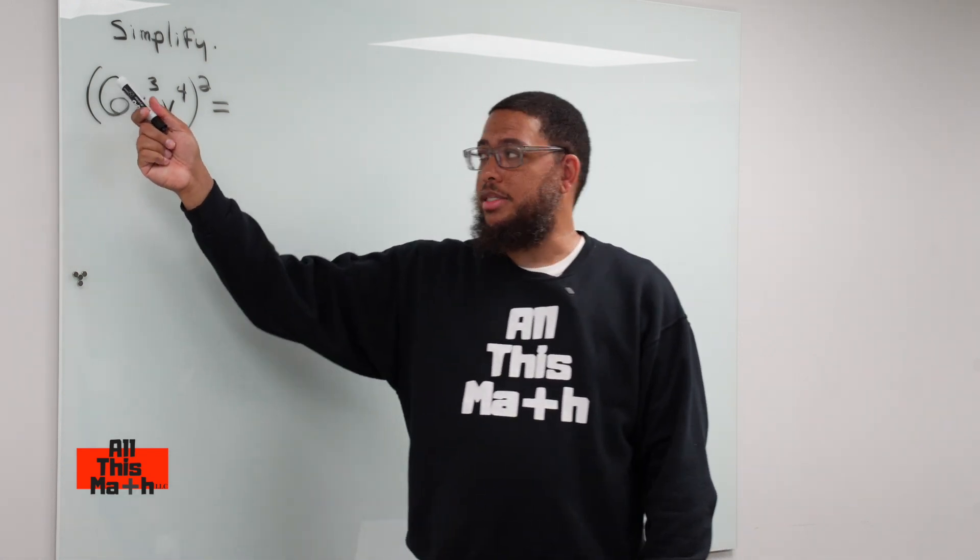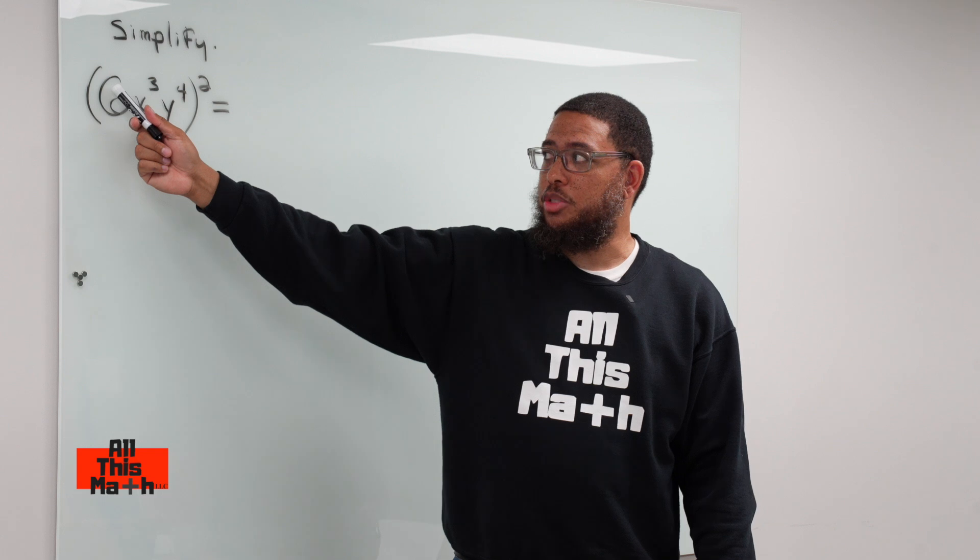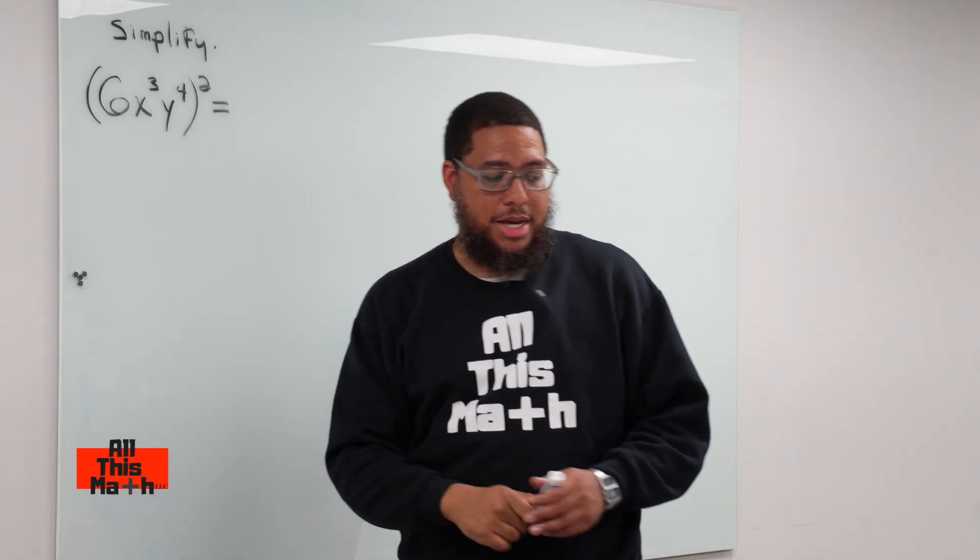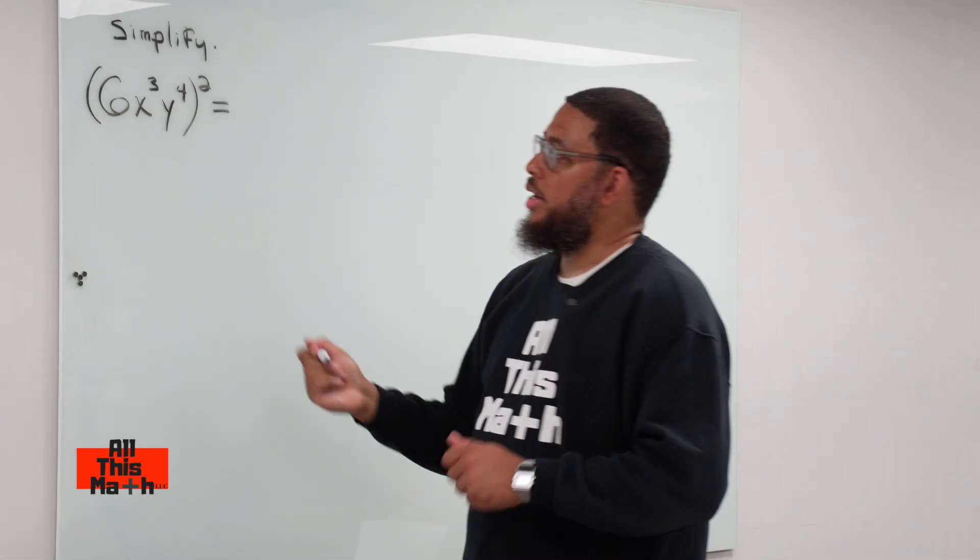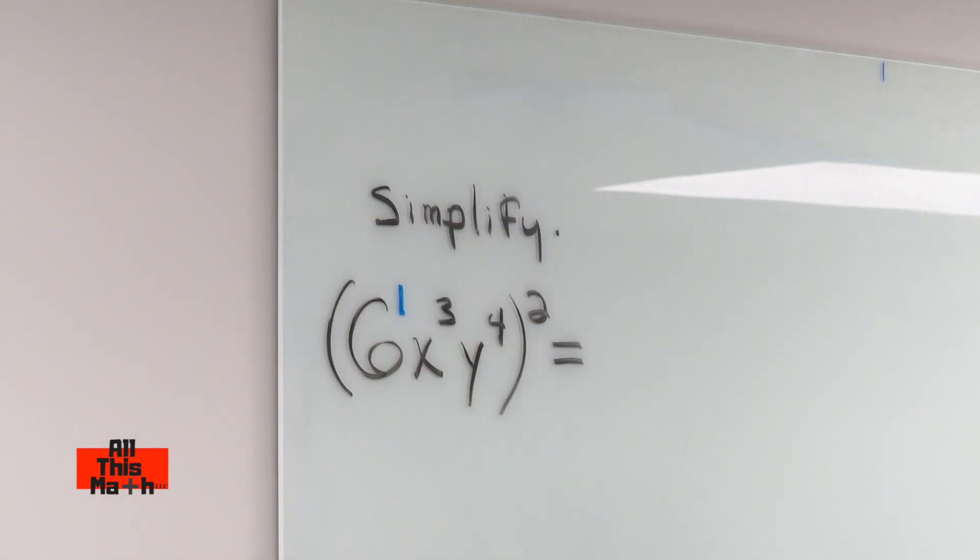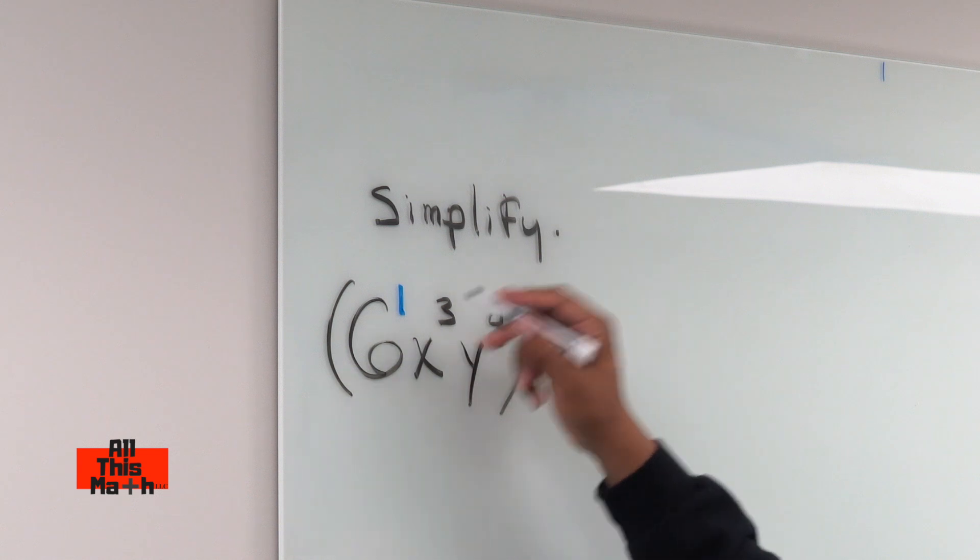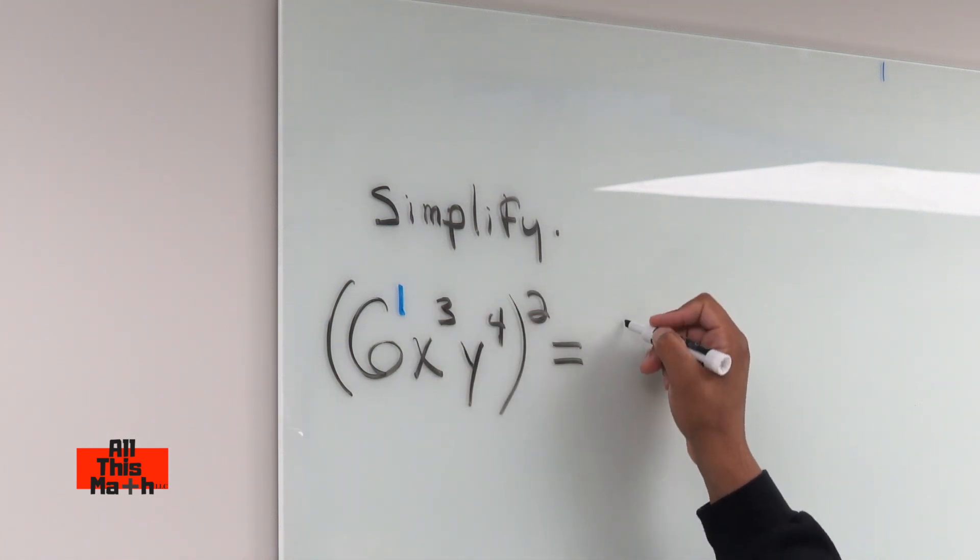Now one common mistake that people make is they forget that this 6 actually has an exponent. The coefficient 6 has an exponent even if it's not written, it still has an exponent. So we can think of that as 6 to the first power, even if it's not written. So we're going to do 1 times 2, which is going to give us 6 squared.